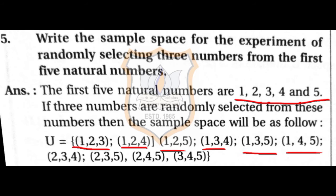Starting with 2: {2,3,4}, {2,3,5}, {2,4,5}. Starting with 3: {3,4,5}. No further possibilities exist, because starting from 4 would give {4,5,1} which is already listed as {1,4,5}. So this is the complete sample space of Question 5.